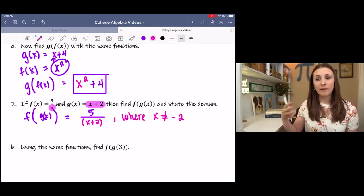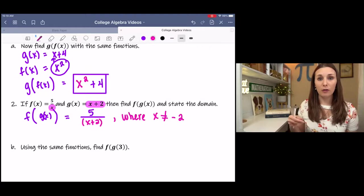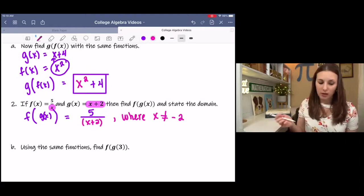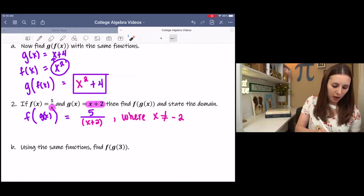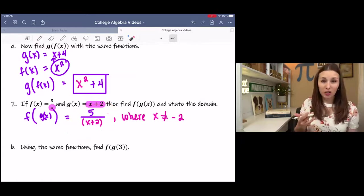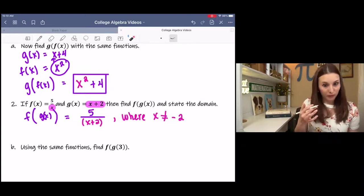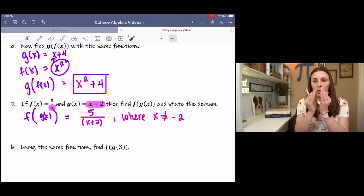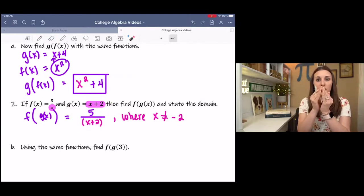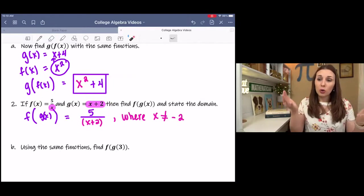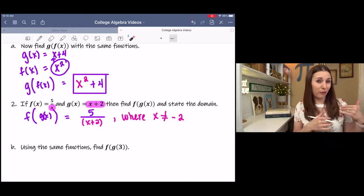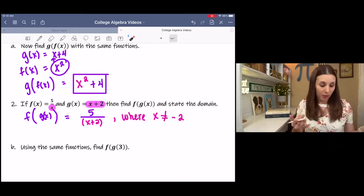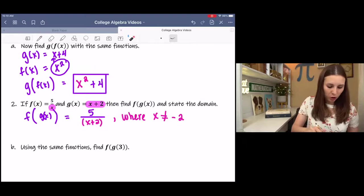Then it says, using the same function, find f of g of 3. There's several ways you can do this. We already found f of g of x, so we could just take f of g of x and plug in 3. Or you could plug in, you could find g of 3, and then plug it into f of x. So you work your way out. You start with the innermost parentheses and then work your way out. Or you can use the answer that we found in the first part of the question to plug in 3. I'll show you both.